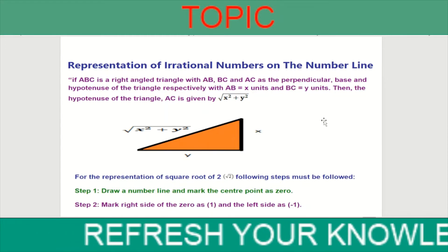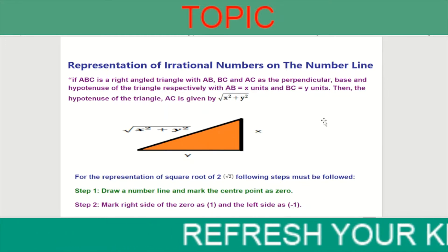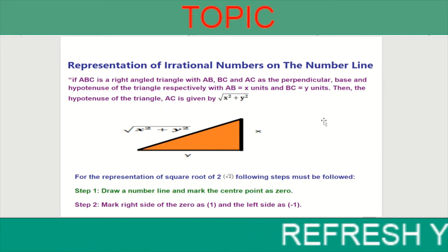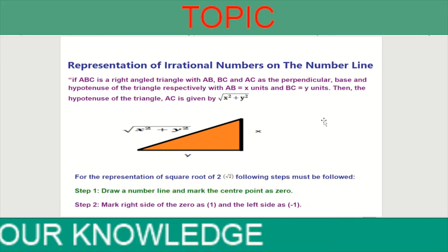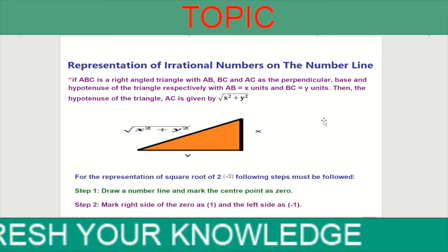If ABC is a right-angled triangle with sides AB, BC, and AC as the perpendicular, base, and hypotenuse of the triangle, respectively.